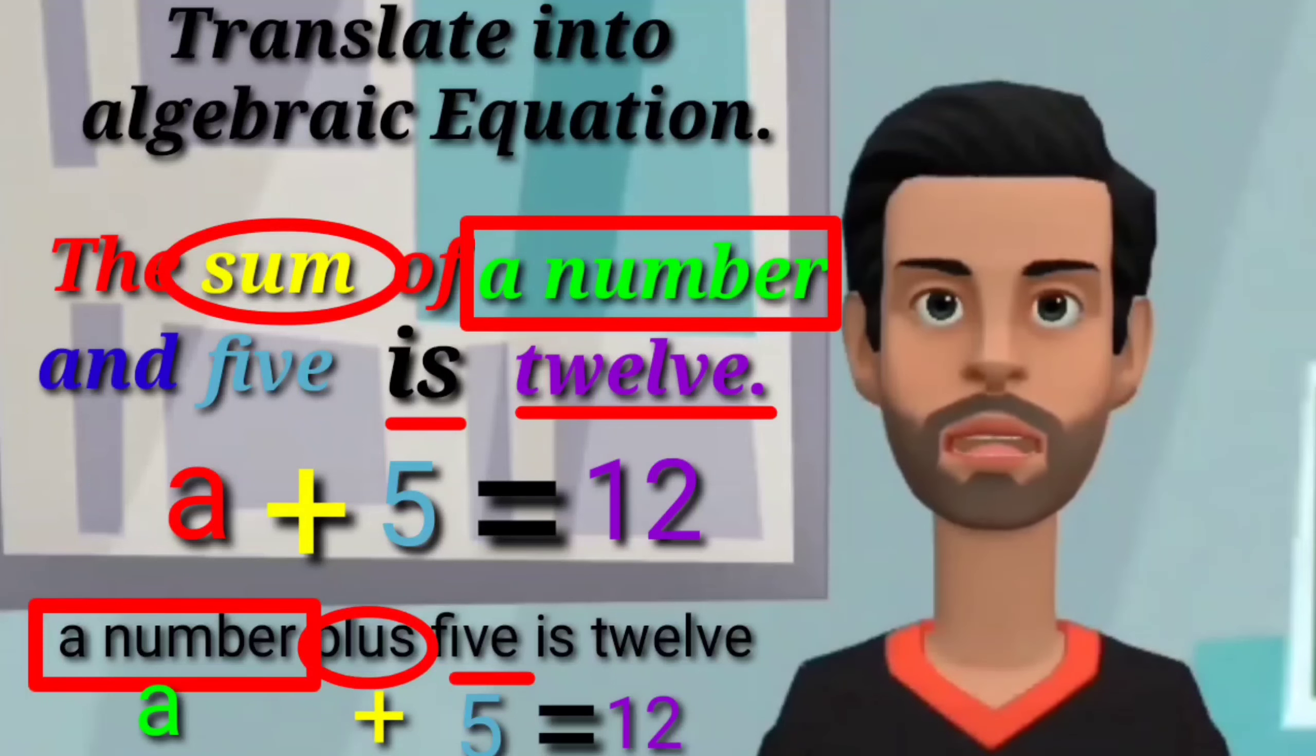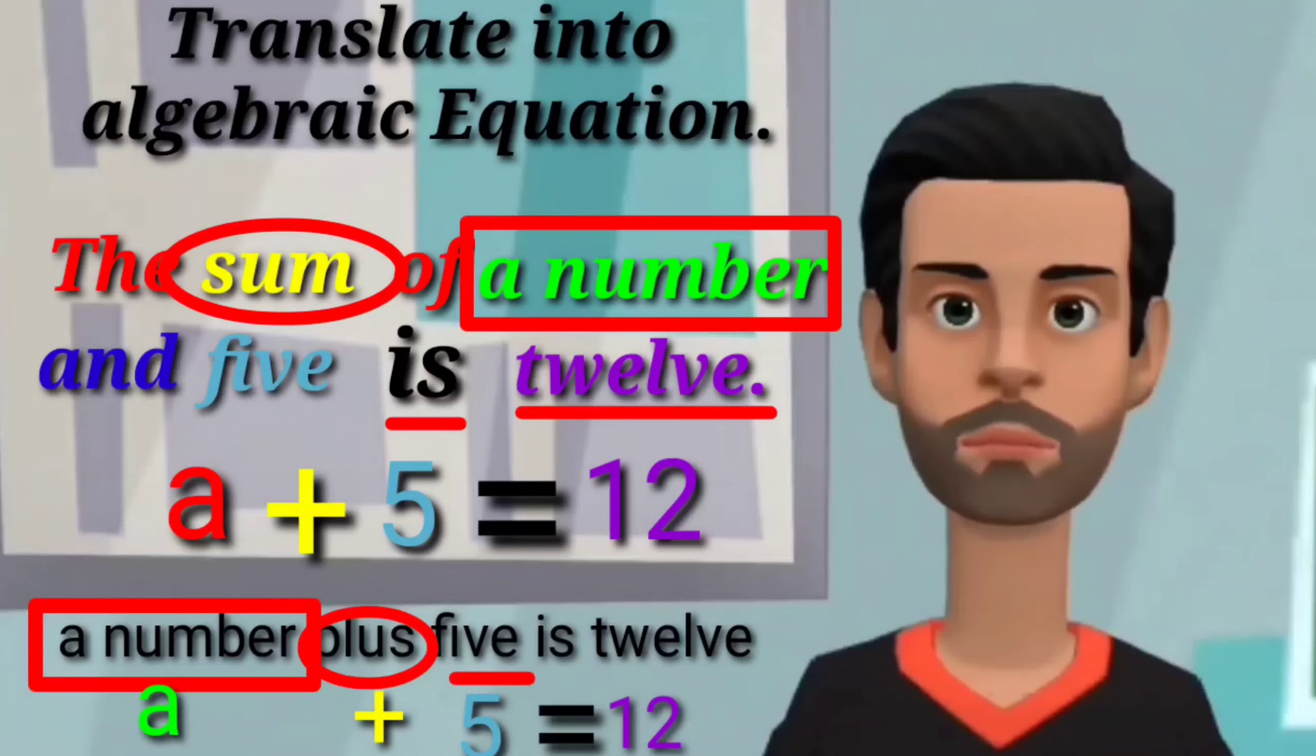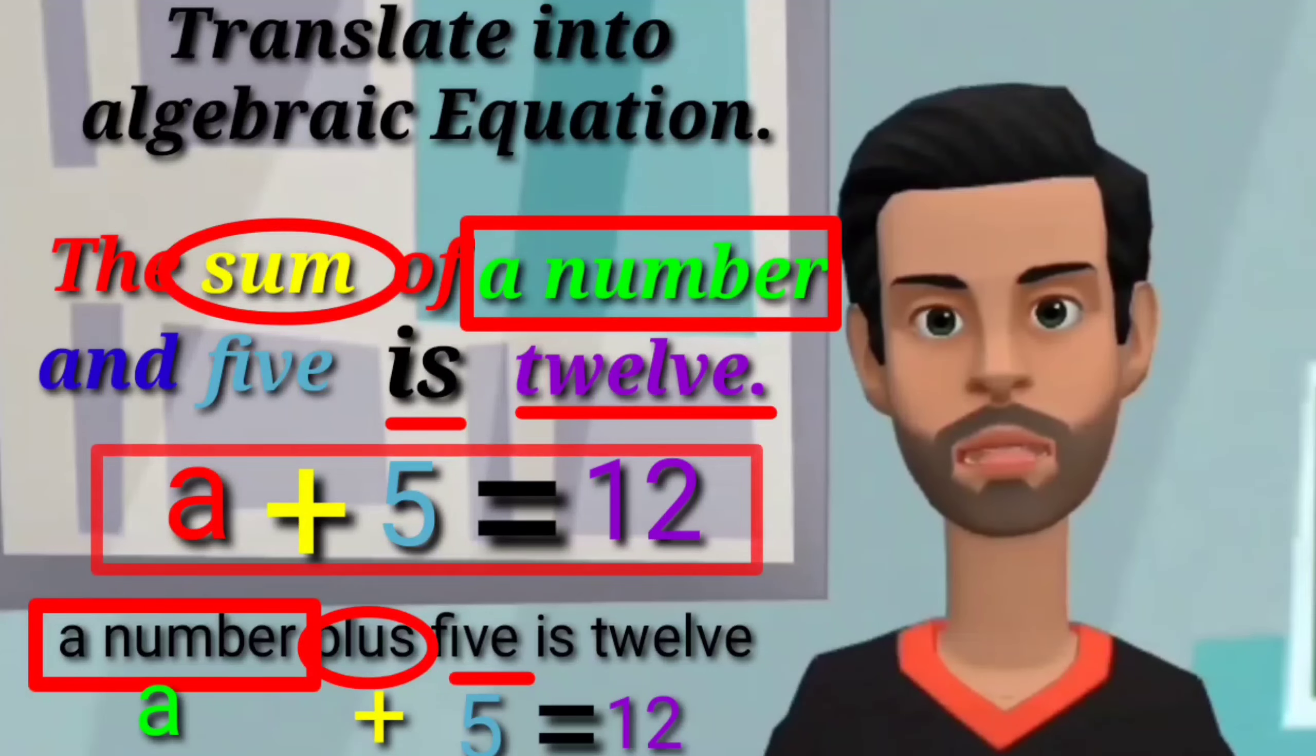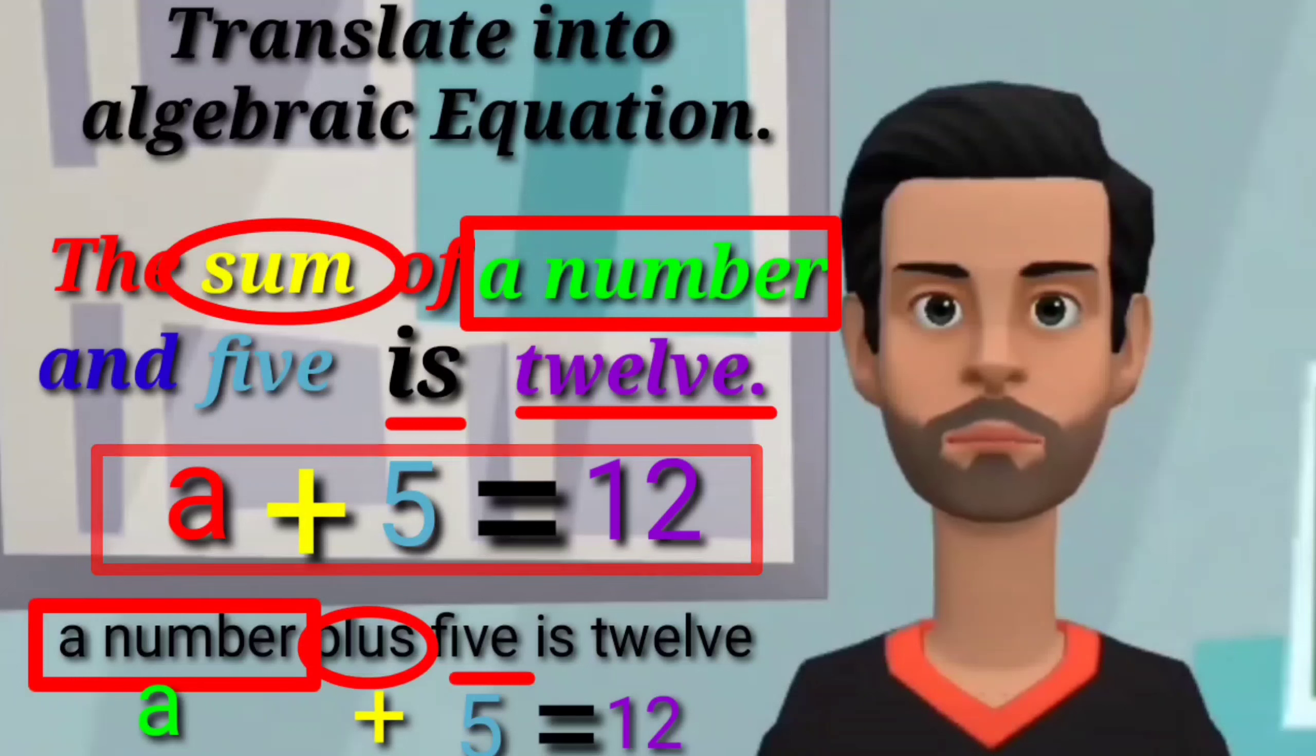So, the sum of a number and five is A plus five equals twelve. Therefore, the algebraic equation is A plus five equals twelve.